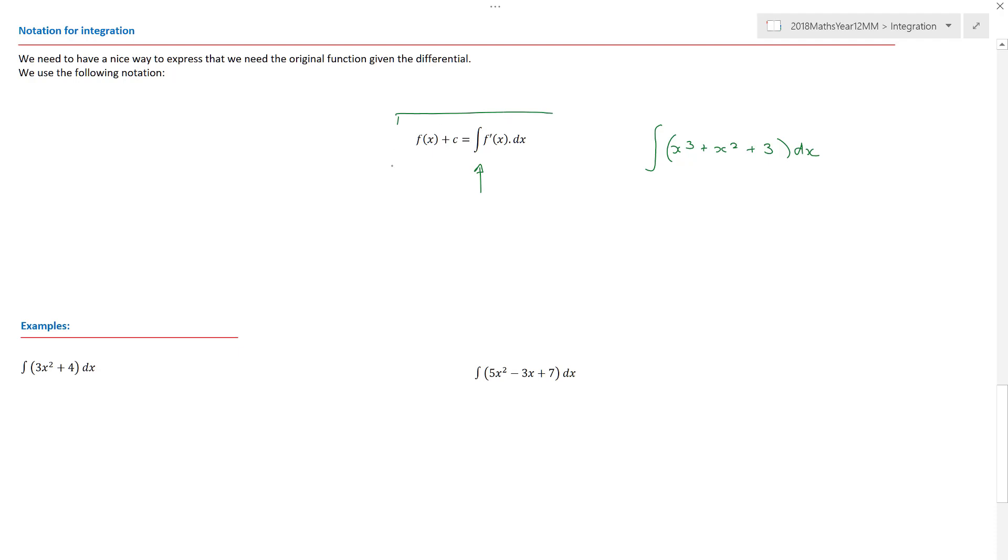So what's this all about? Well, all it's trying to say is that if I integrate a derivative with respect to x, and again, I'll come back to that with respect to x thing, I'm going to get my original function, and I have to add on some sort of constants. And you're going to say, well, hold on a moment. You've written it the other way around. Yes. Because remember, what's on the left hand side of an equals and right hand side of the equals is the same. So this is probably the more noted way of doing it.